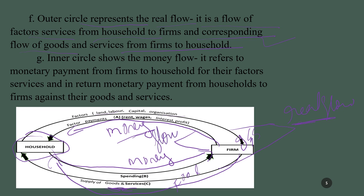The inner circle shows money flow. It refers to monetary payments from firms to households for their factor services, and in return monetary payments from households to firms against their goods and services.